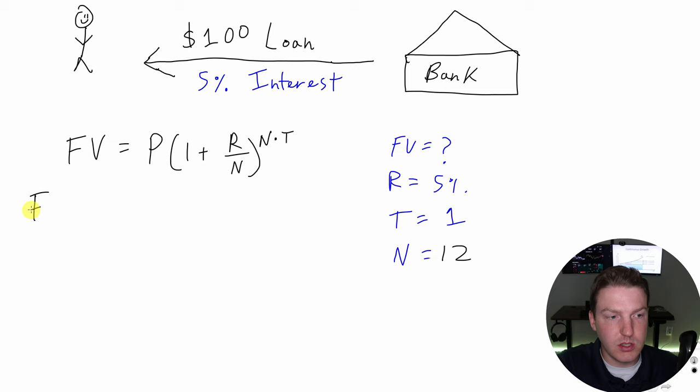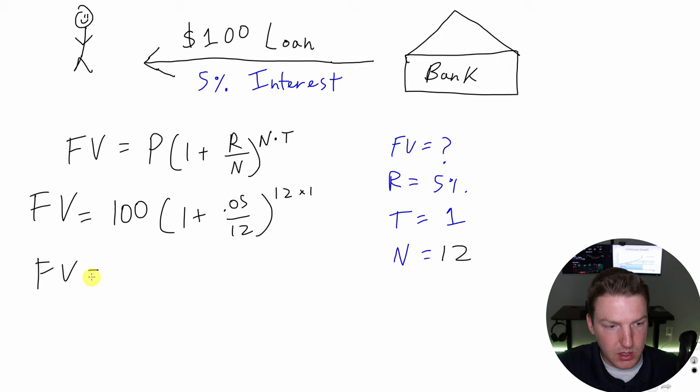Let's just go ahead and solve this so we can see what it looks like. Future value equals the $100 principal times one plus the 5% interest rate divided by 12 compounding periods per year to the exponent of 12 times one. If we simplify this, we see that FV equals 100 times 1.004166 repeatedly to the exponent of 12. If we solve for that, we find that FV actually equals $105.12.